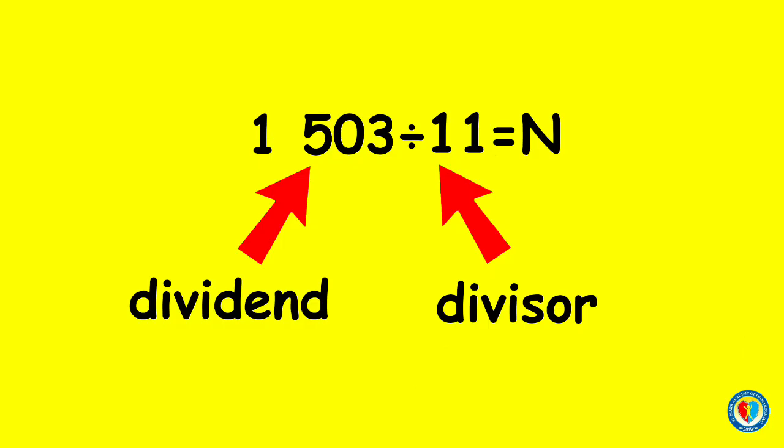we have 1503 divided by 11. Our dividend is 1503 and the divisor is 11. Let's estimate the quotient.